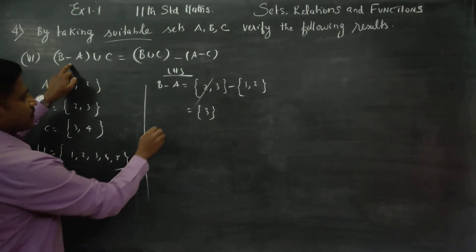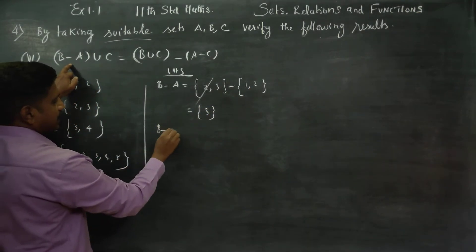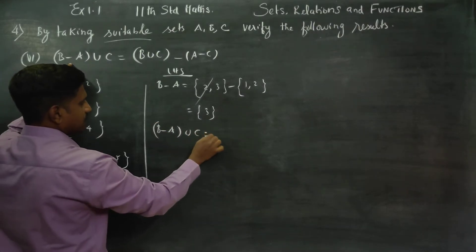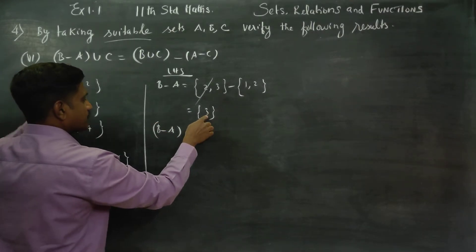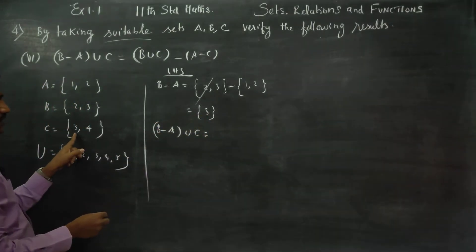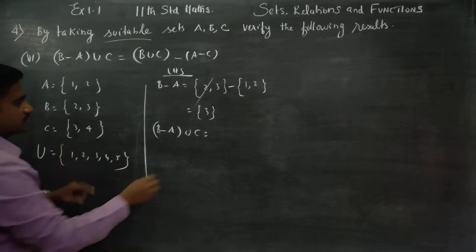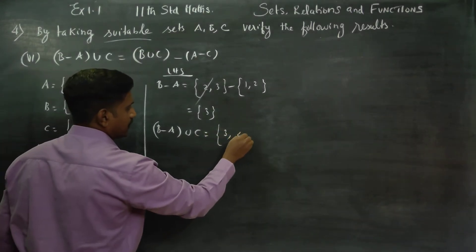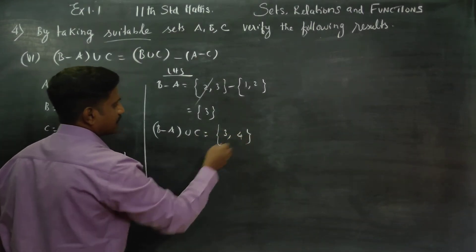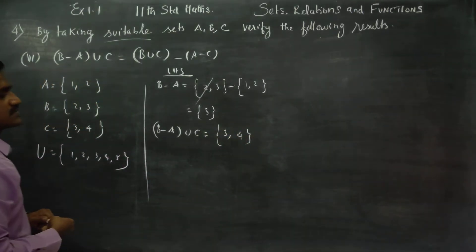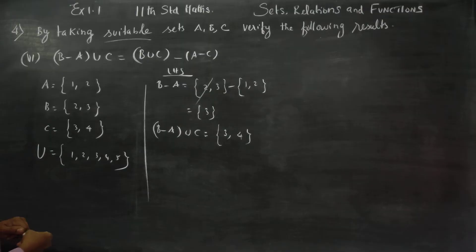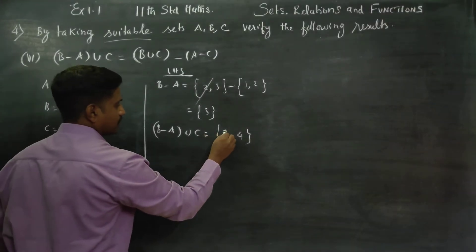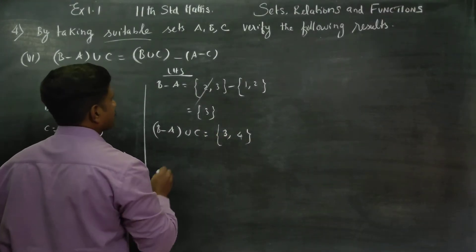Then I have to find (B minus A) union C. This is C. C already has 3, so 3 is 3. So the union gives us {3, 4}.